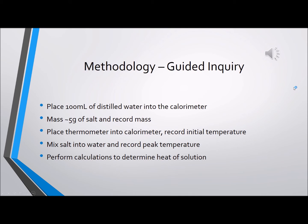The second part of the lab involved determining how much heat was actually released by each salt. Each of the steps detailed here were repeated six times, one for each sample of salt. First, 100 milliliters of distilled water was placed into the calorimeter. Then around 5 grams of the salt sample were massed out and the mass recorded. The thermometer was placed into the calorimeter and allowed to sit for several minutes to record the initial temperature of the water. Then each salt was mixed into the water and allowed to stir for up to five minutes until the peak temperature was reached — either the lowest or the highest temperature recorded by the thermometer. After all data points were recorded, the proper calculations were performed to determine the heat of solution for each salt.